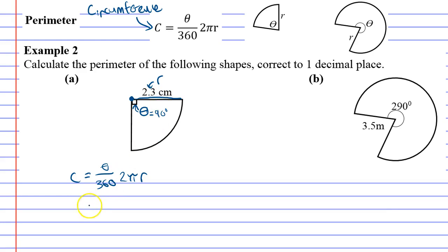For question A, we could just substitute into our equation. Theta being 90, remembering that it's all in terms of multiplication: 2 times pi times R, where R is 2.3. I'll work it out on my calculator: 90 over 360 times 2 times pi times 2.3, and it comes out to 3.6 centimeters to one decimal place.